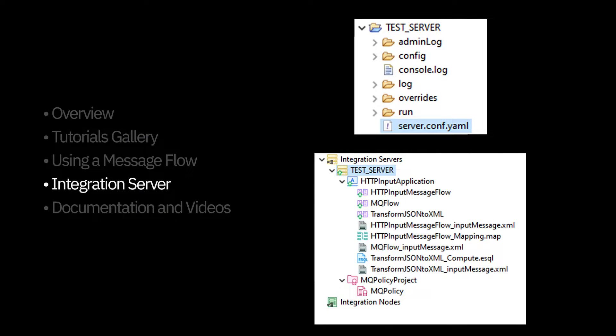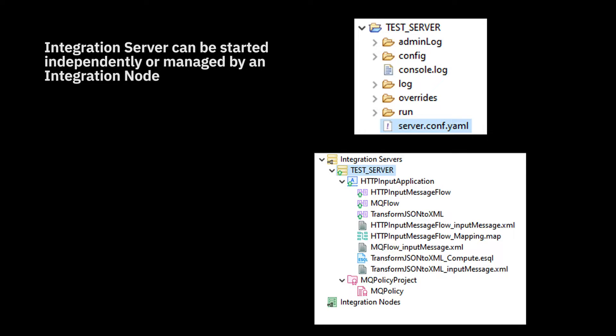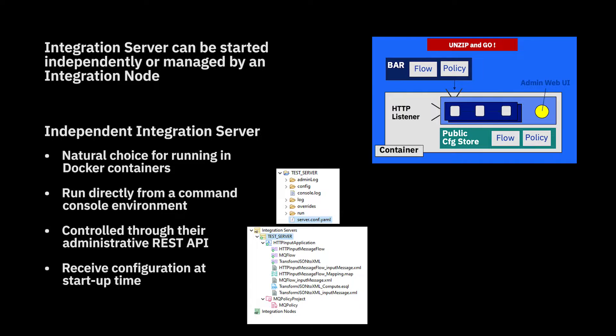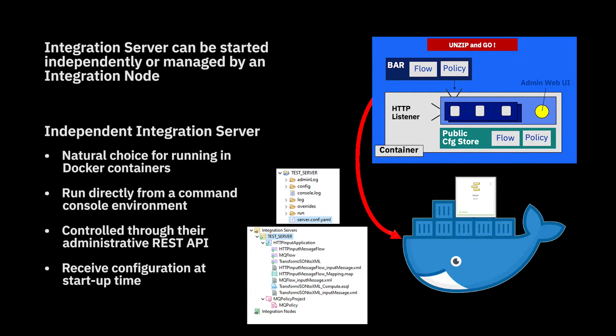In order for a message flow to process and transform a message, the application which contains the message flow must be deployed to an integration server. An integration server is a process which can be started independently, or it can be managed by a component called an integration node. By using an independent integration server, you can quickly deploy and test your integration solutions. The integration server can also be used in a container, which you can run in your cloud deployments. If you want to use the integration server locally, you can start it on the command line or from the toolkit.